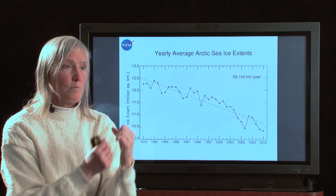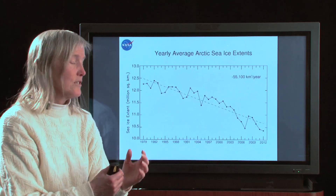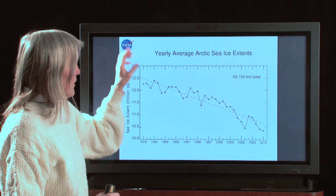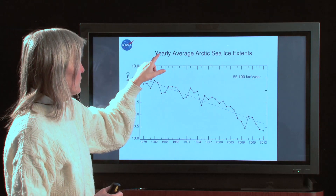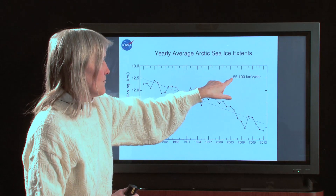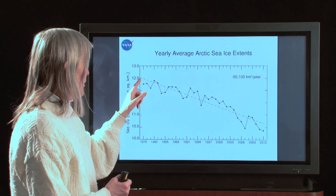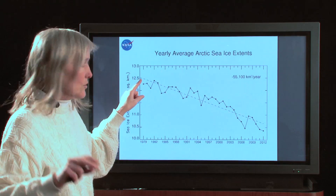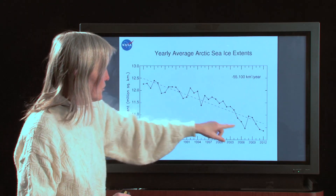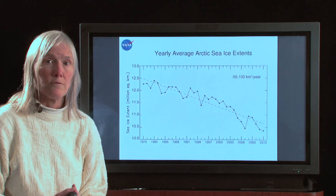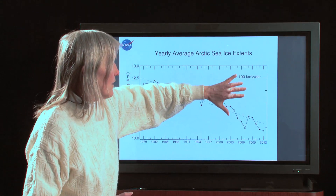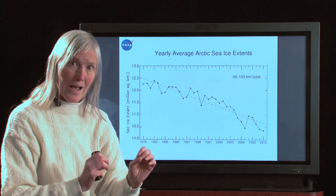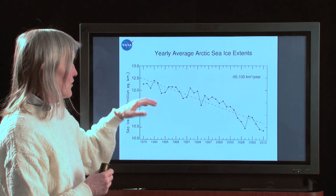So that's the slope of the line. Our final plot has our data points, our linear least squares line, and the result of negative 55,100 square kilometers per year. When people call us up and say how much has the sea ice decreased, we can say that the best least squares fit tells us the yearly averages have decreased by that amount over the period from the beginning of 1979 to the end of 2012. This is a final number that a lot of people are interested in because of changes in the Arctic sea ice.